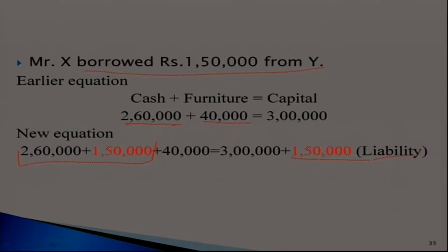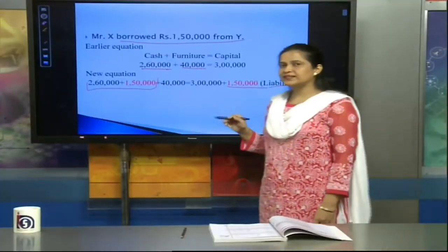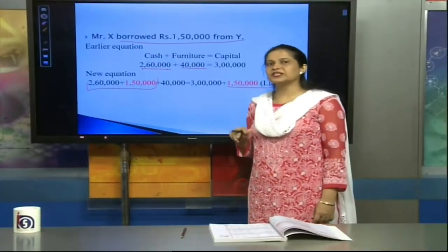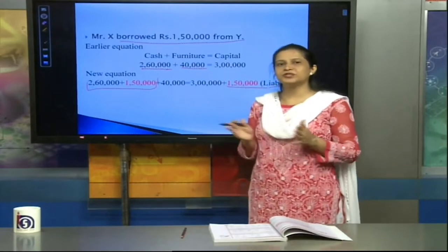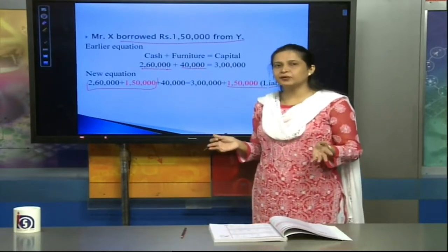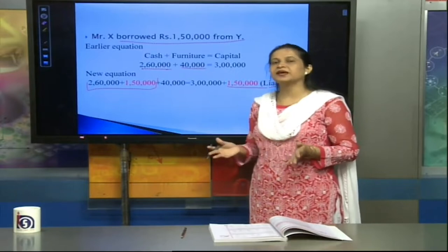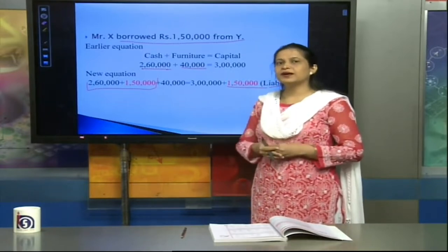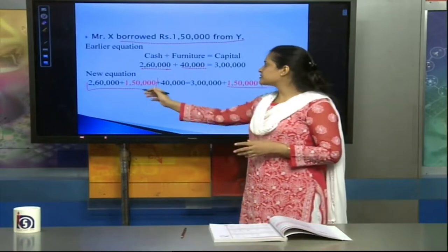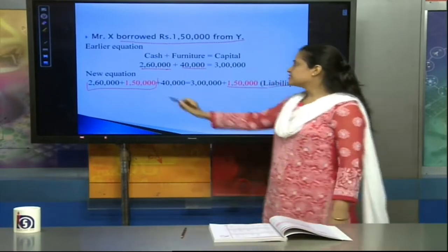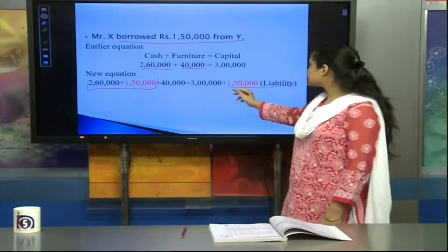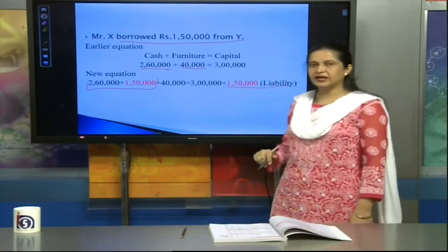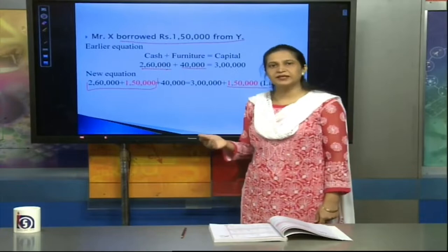Because today you have taken this cash from Y, at the time of repayment this cash that you have taken — which is your liability — will have to be returned. So this is the new equation. But you will always see that the accounting equation is balanced. Equation means that both sides are equal. In any mathematical equation, left-hand side is always equal to right-hand side. That's why this equation always satisfies: here we have added Rs. 1,50,000 and here we have also added Rs. 1,50,000, so the total equation remains the same.